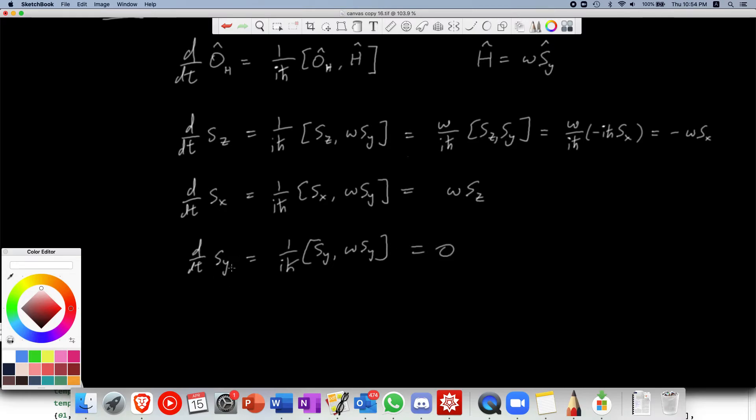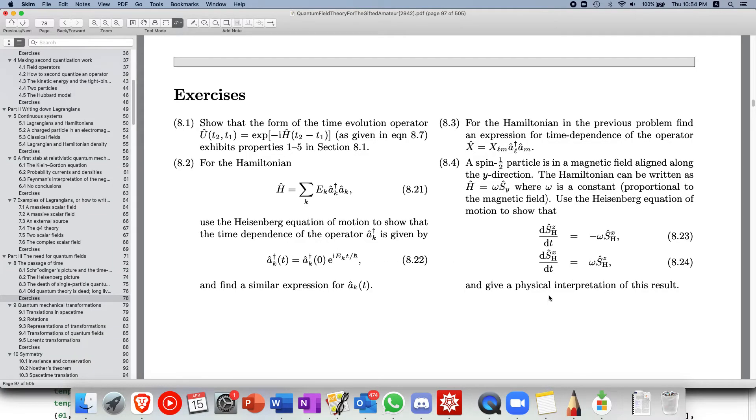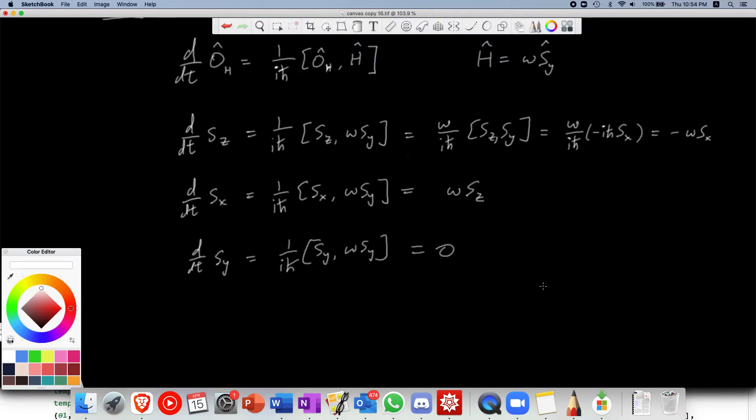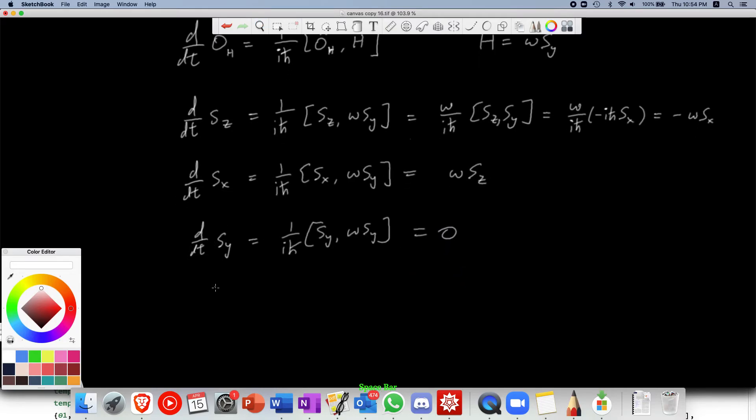So the time evolution, there's no time evolution for the s y operator, the spin in the y direction. So and then last part, they said give a physical interpretation of this result. So if we compute the expectation values of s x and s y and s z, we see that basically the s x and s z, they form couple differential equations, right?